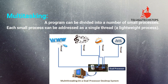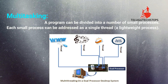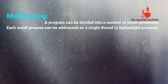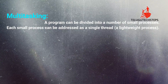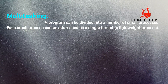To explain in a programmatic way: a program can be divided into a small number of processes. Each small process performs one task. Each small task can be addressed as a single thread. A huge program is divided into multiple small parts or tasks, and each task is executed by a single thread. That single thread is nothing but a lightweight processor, also called a lightweight process.